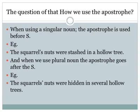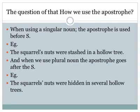And when we use plural nouns, the apostrophe goes after the s. For example, the squirrels' notes were hidden in several hollow trees. Squirrels is plural here, and when we use plural nouns, we put the punctuation mark after s.